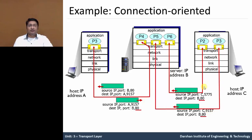To transfer data for process P2, we need the four-tuple: source IP C, source port 5775, destination IP B, and destination port 80. For process P3, the source IP is C and source port is 9157, with destination IP B and destination port 80.